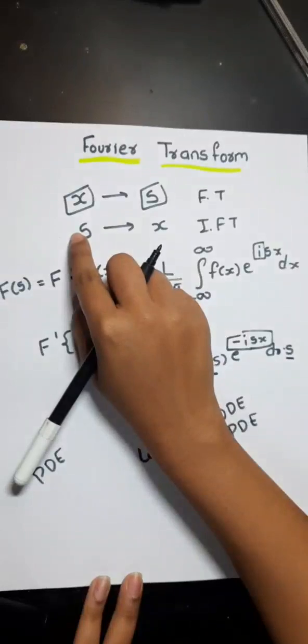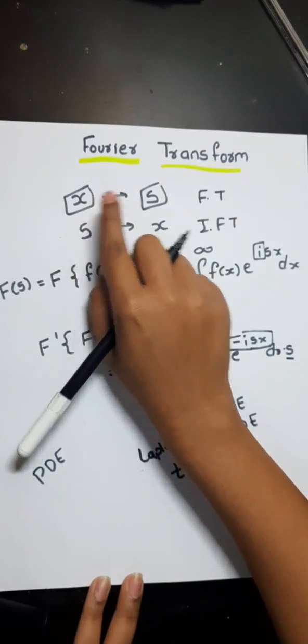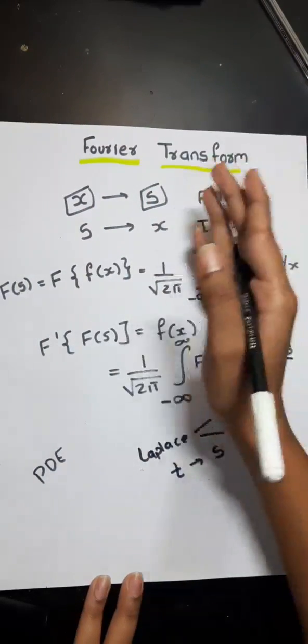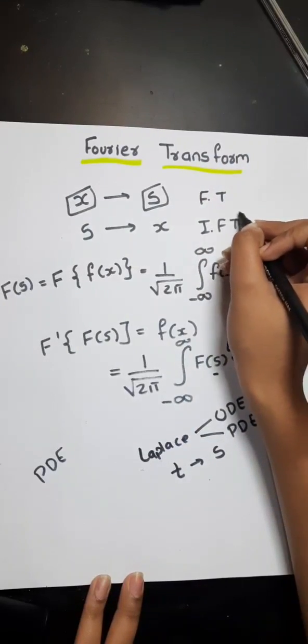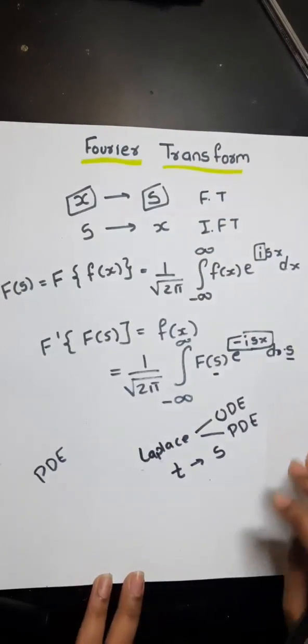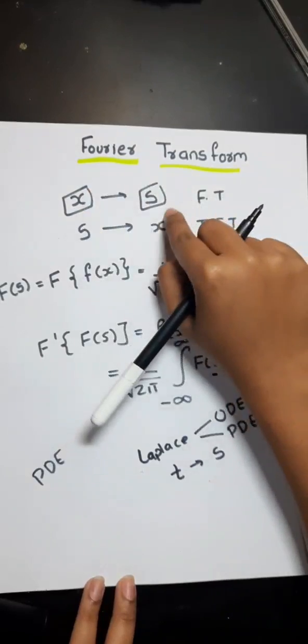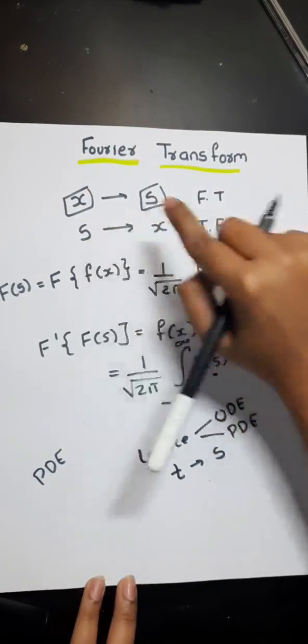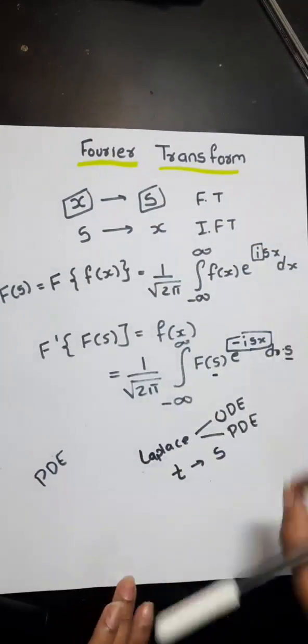So when we transform from one scale to another scale, we again reverse back also. For that we use inverse Fourier transform. From x scale to s scale and again from s scale to x scale.